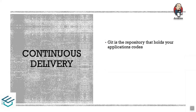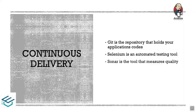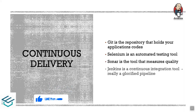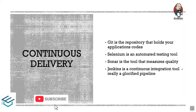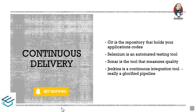Next, in the video we will look at the code promotion tools. Git is one tool used for version control and managing code. Selenium is an automated testing tool. SonarCube is used for code quality. These tools handle automated testing and code review in the pipeline. Jenkins is the main continuous integration tool used to build and apply the pipeline.